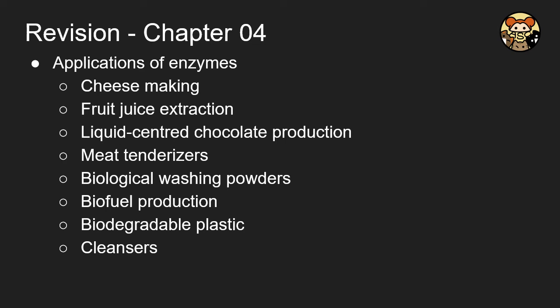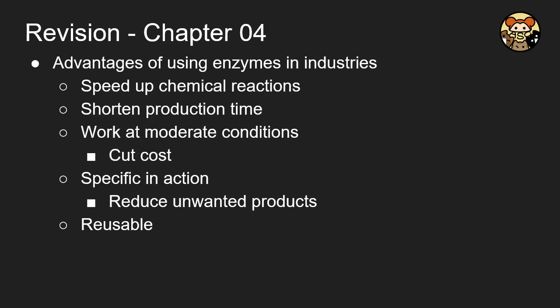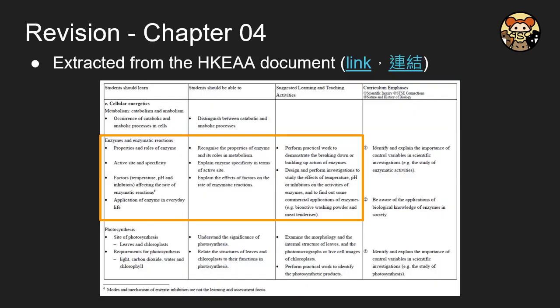Here are some applications of enzymes. You will not be required to list out all of them, so just pick one or two to remember and keep it in your pocket. Here are some advantages of using enzymes in industry: it will definitely speed up the reaction and will shorten the production time. Also, for the enzyme, it can work in moderate conditions, not at extreme high pH or high temperature, that's why you cut down the cost. It is specific to the activities based on the property of the enzyme, and also it is reusable. The last two terms are for the properties of enzymes.